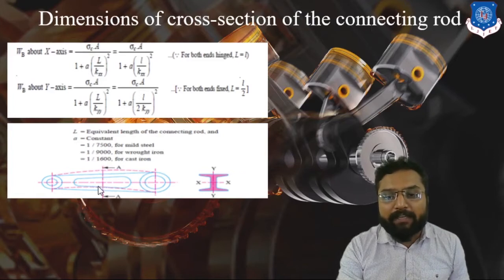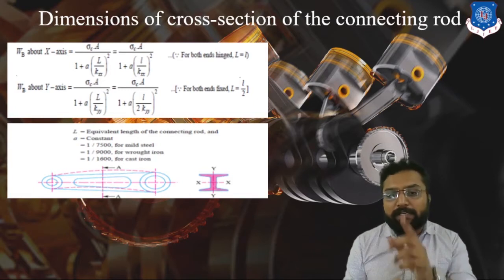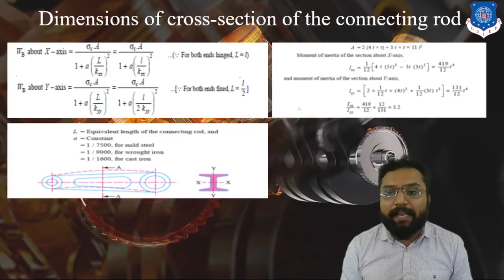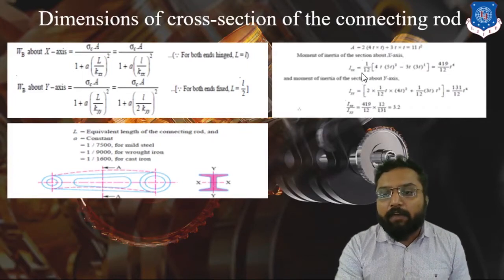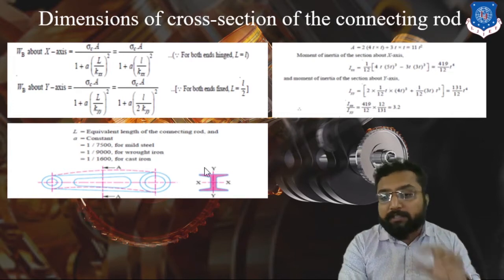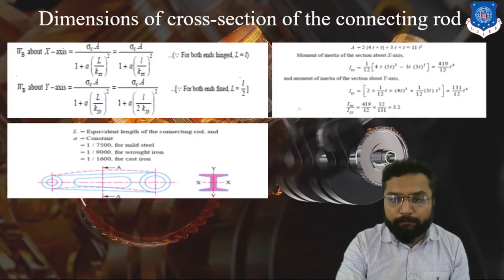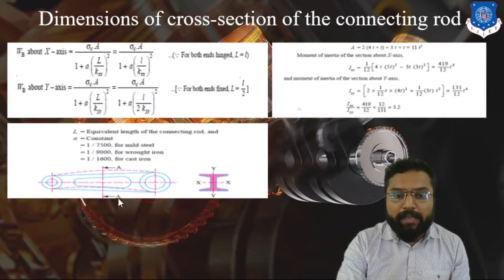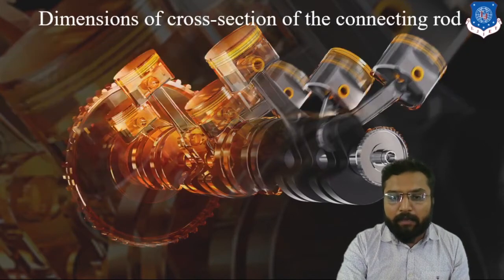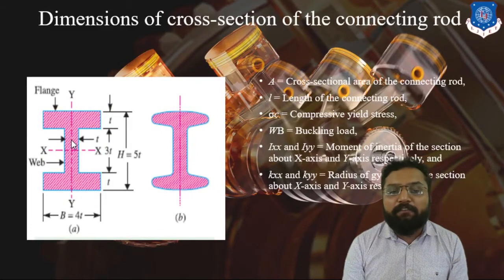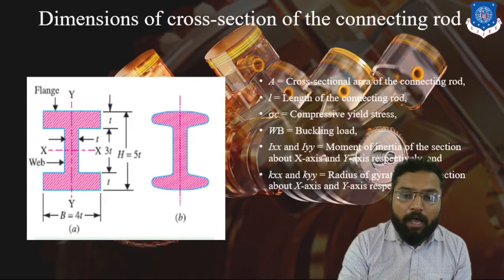Here you can see how buckling occurs in the XX and YY directions. After determining both loads, we consider what KXX and KYY will be. For that, we need to determine IXX and IYY. To calculate IXX, we consider the I-section from the horizontal plane.